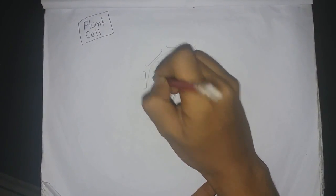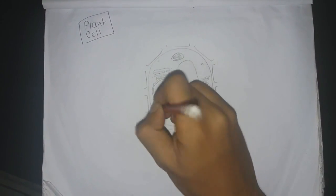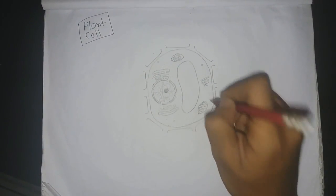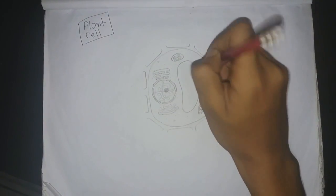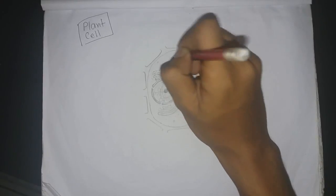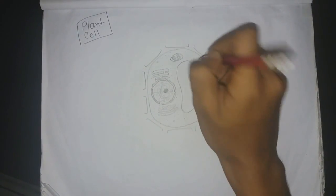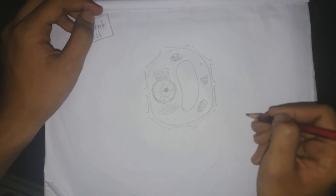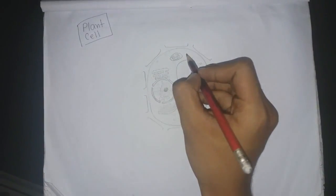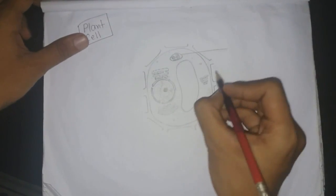So now just let me give the cytoplasm, that bottom like dot shaped. It will make this picture look more good. So I think I'm done with this drawing of the plant cell.